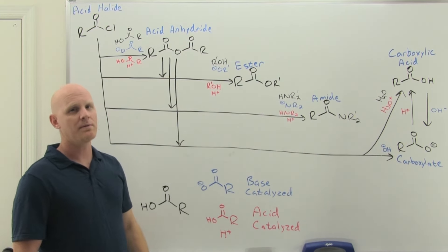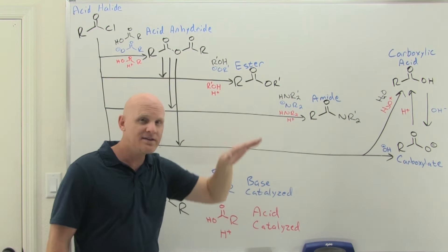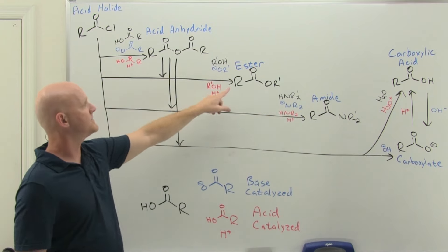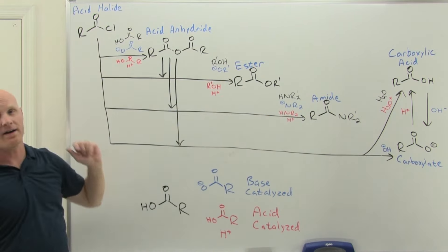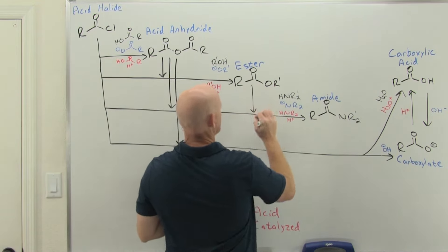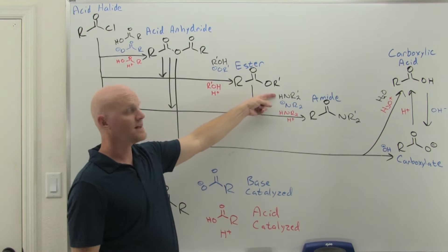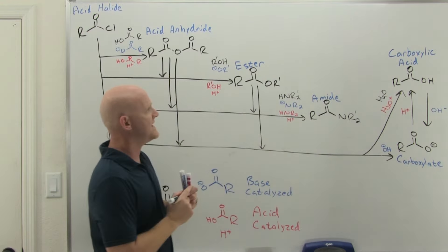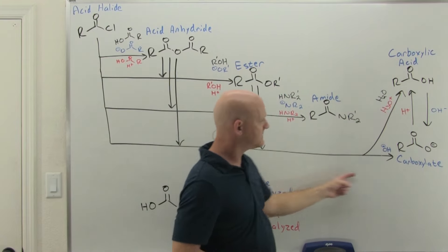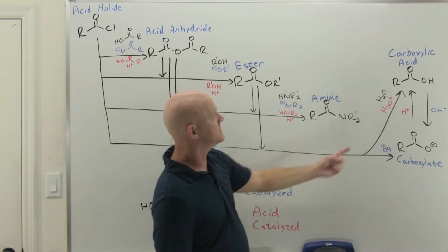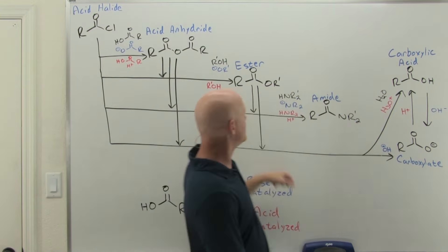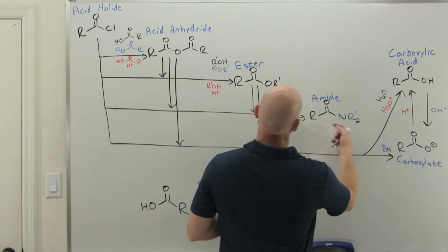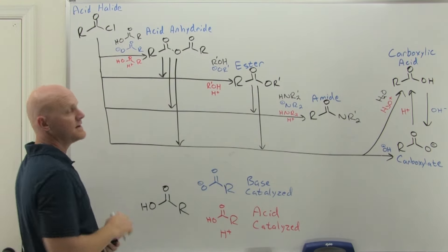With esters we first encounter a problem: the big drop in reactivity from anhydride to ester means uncatalyzed reactions no longer work. Also, you can only go downhill — you can't convert the ester into an anhydride or acid halide. You can turn an ester into an amide, but it must be either base-catalyzed or acid-catalyzed. You can also turn the ester into a carboxylic acid (H₃O⁺, acid-catalyzed) or into the carboxylate (hydroxide, base-catalyzed).